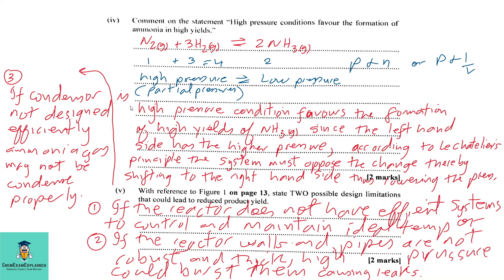So let's begin to answer the question. High pressure condition favors the formation of high yields of ammonia since the left hand side has the higher pressure. According to Le Chatelier's principle, the system must oppose a change, thereby shifting the equilibrium to the right hand side, thus lowering the pressure.